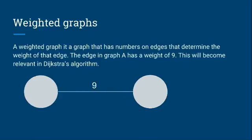Weighted graphs. This, yeah, you use this for Dijkstra's algorithm. It's when you have a weight on the edge. So a weighted graph is a graph that has numbers on the edges that determine the weight of the edge. So if you had, like, one here and nine here, nine would be greater than one. And we'll go into that when we do Dijkstra's algorithm in the next tutorial, or whenever tutorial that is.